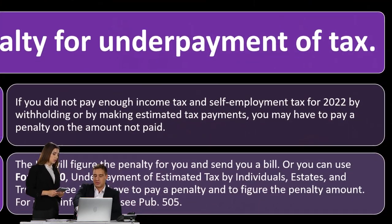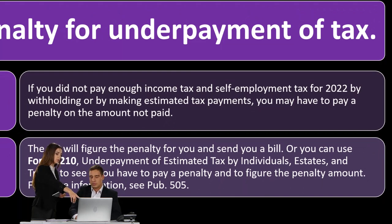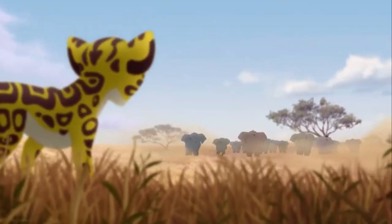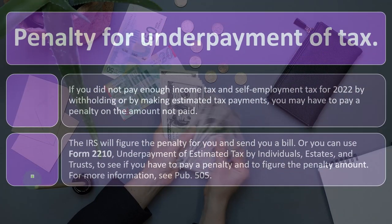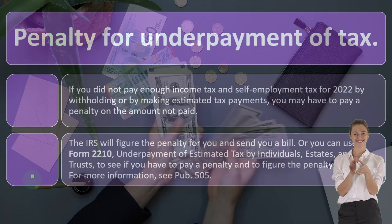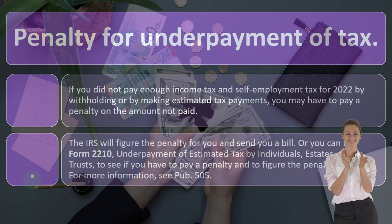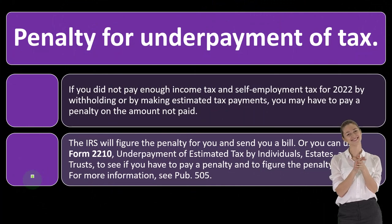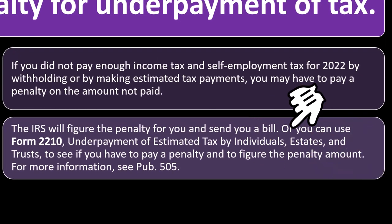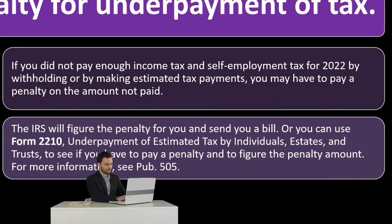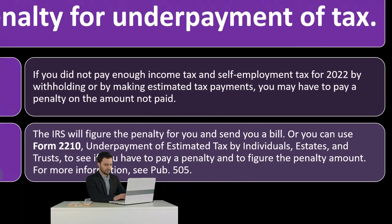That's the point — that's what you're trying to avoid. The IRS isn't trying to be nice; they want their money earlier and they want to maximize how likely they are to get paid by making you pay as you earn. If you don't do it, they hit you with penalties and interest. The IRS will figure penalties for you and send you a bill, or you can use Form 2210 — Underpayment of Estimated Tax by Individuals, Estates, and Trusts — to see if you have to pay a penalty and to figure the penalty amount. For more information, see Publication 505.